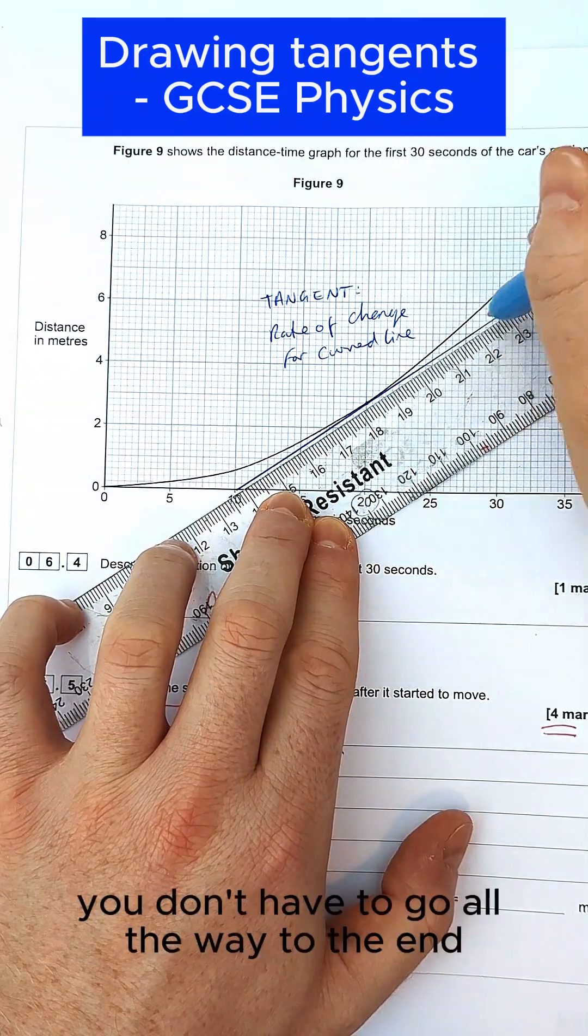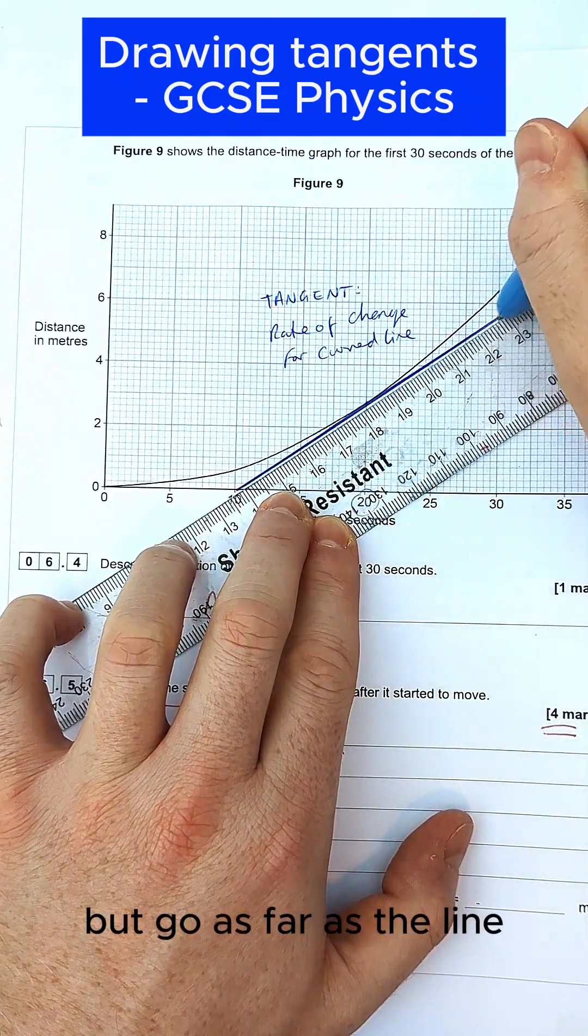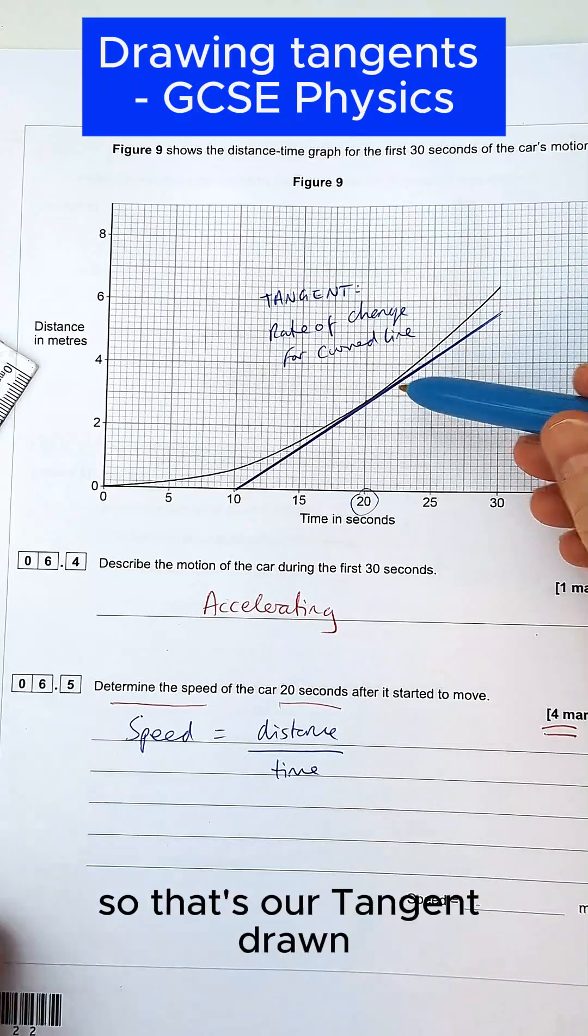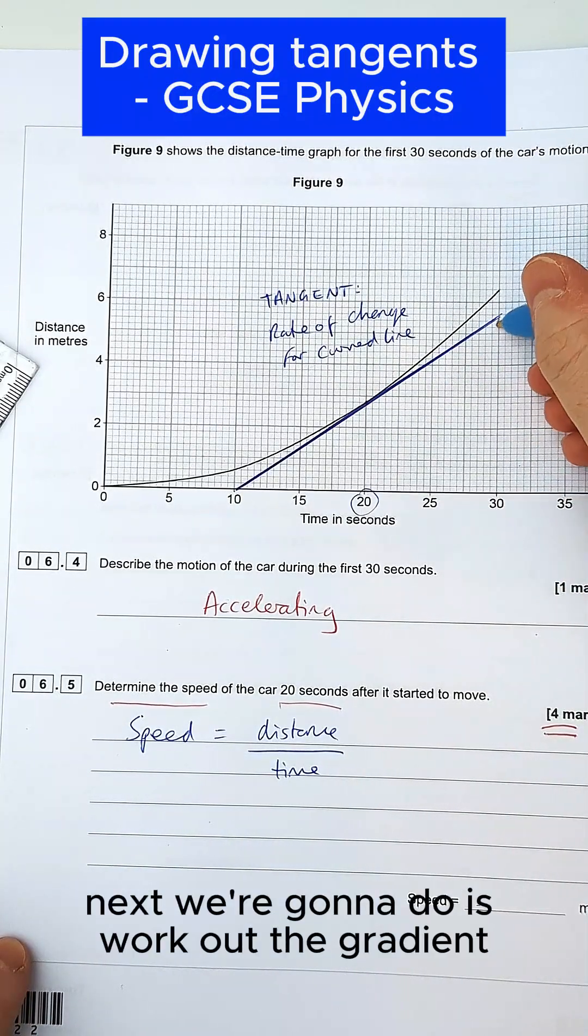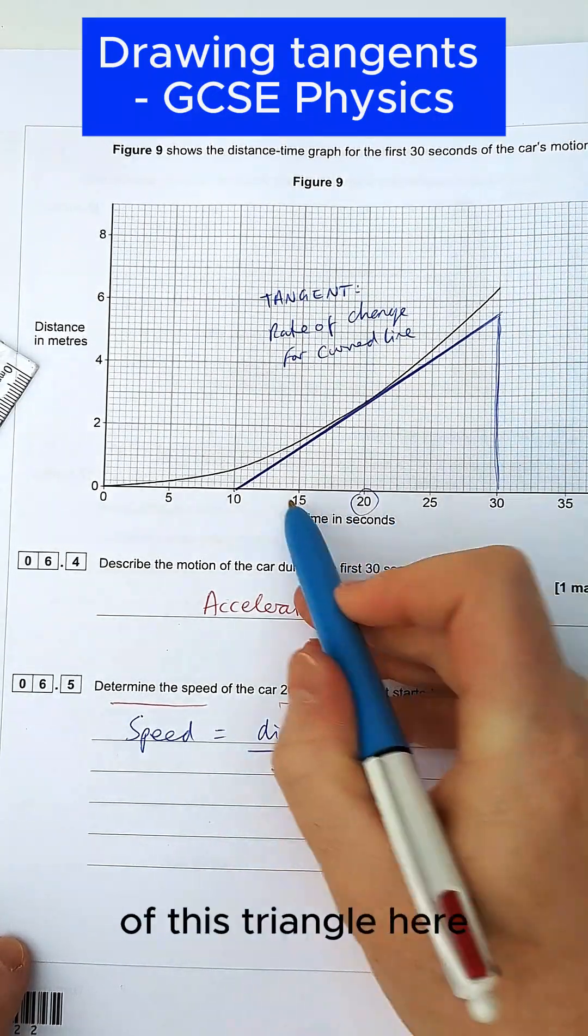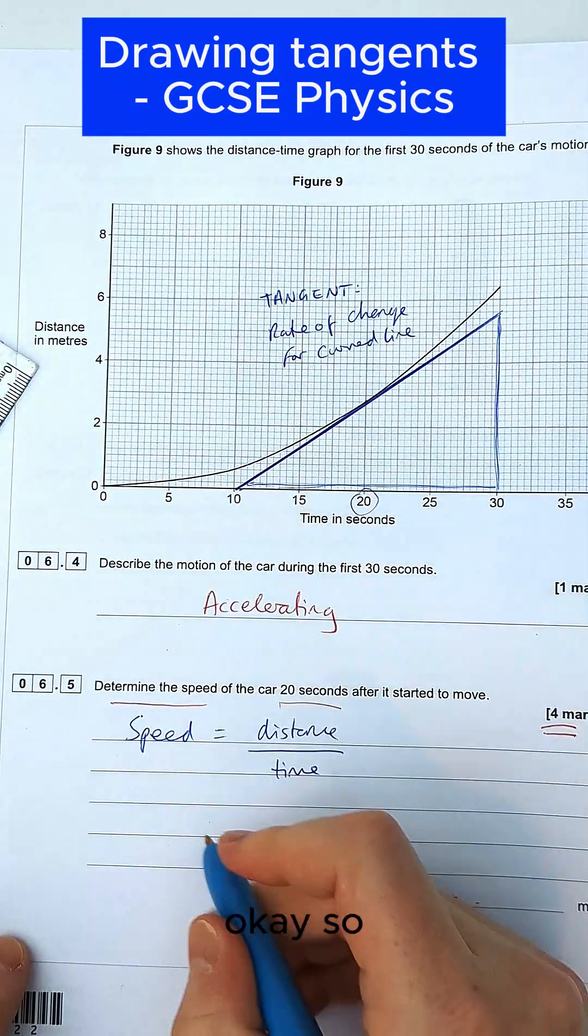You don't have to go all the way to the end, but go as far as the line because it makes your calculation easier later. So that's our tangent drawn. Next what we're going to do is work out the gradient of this triangle here.